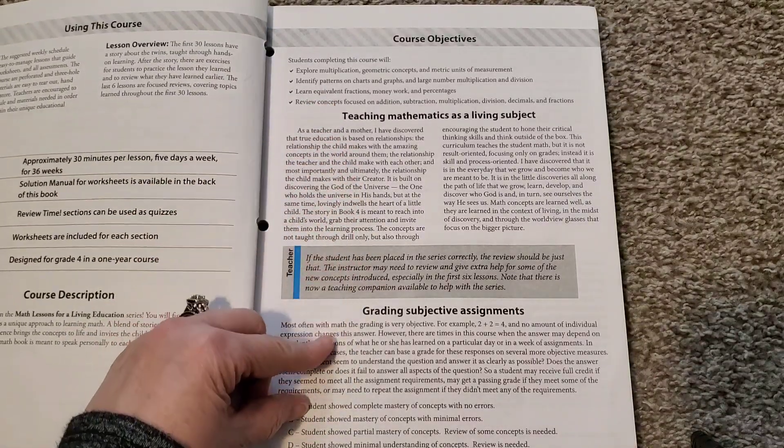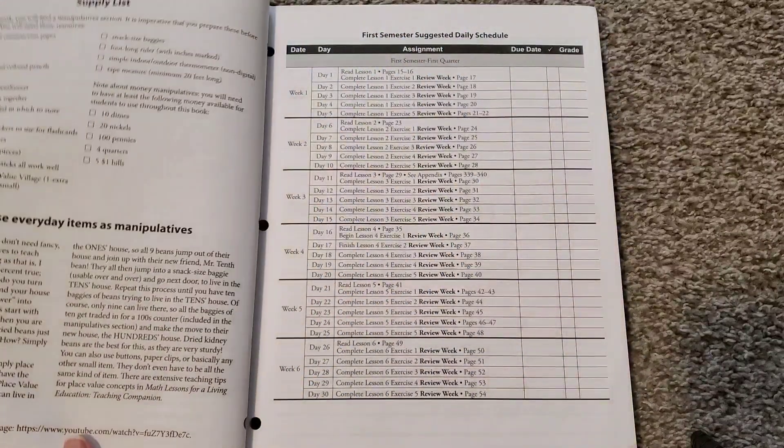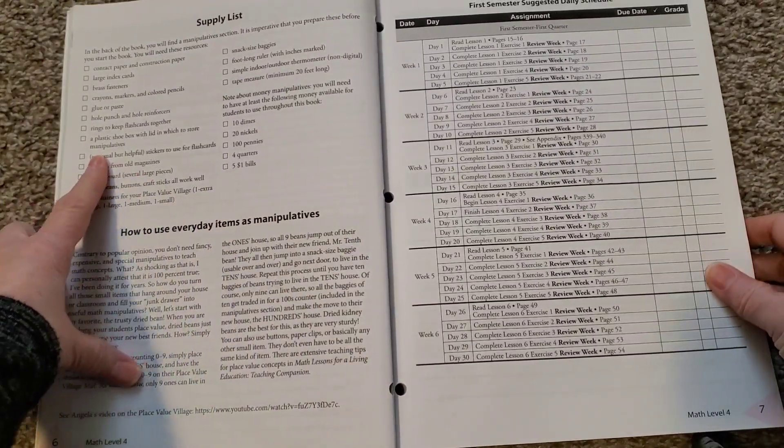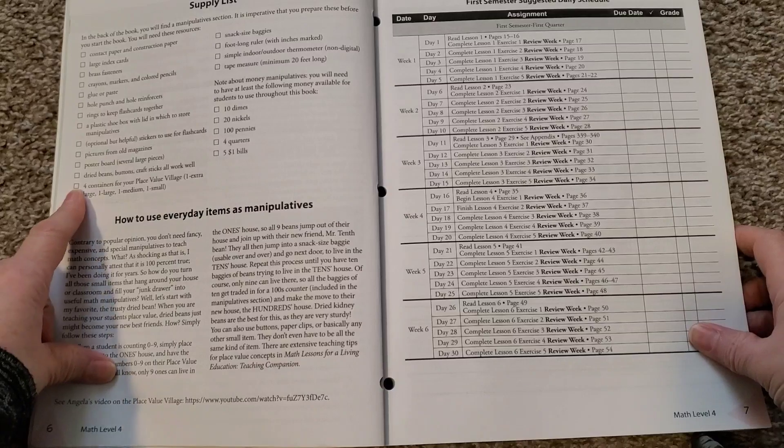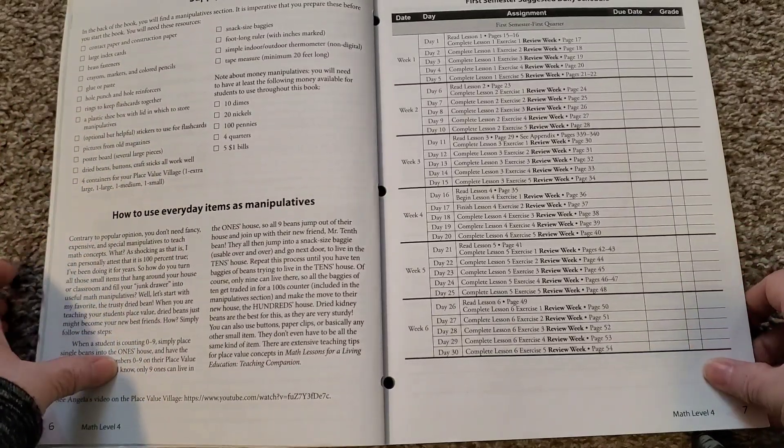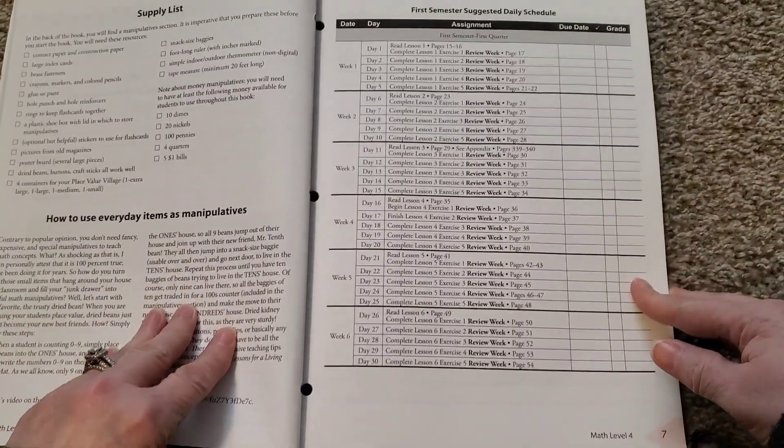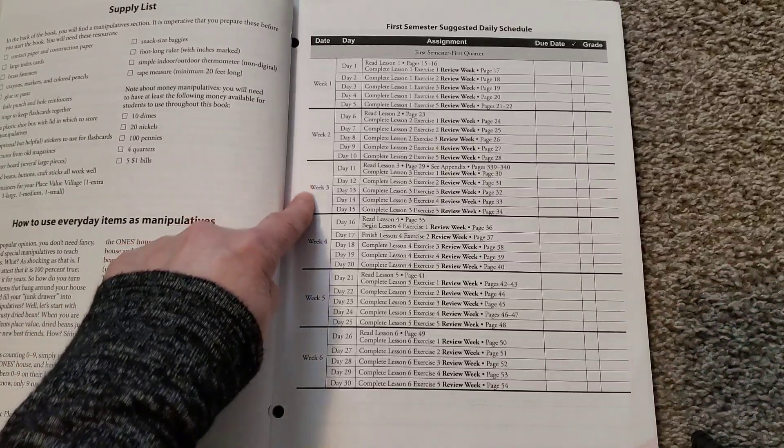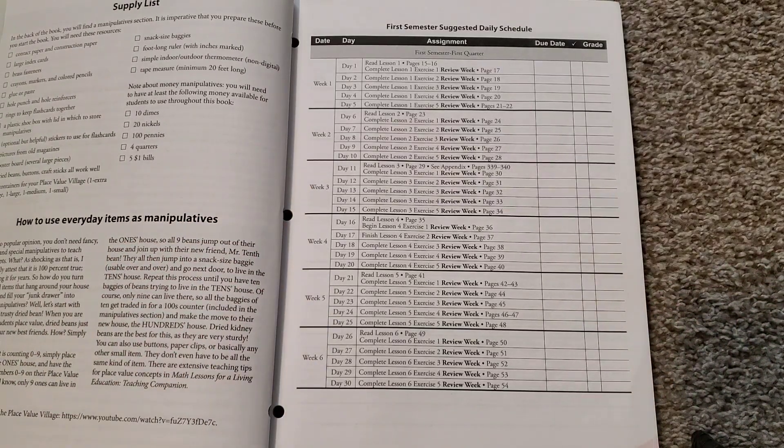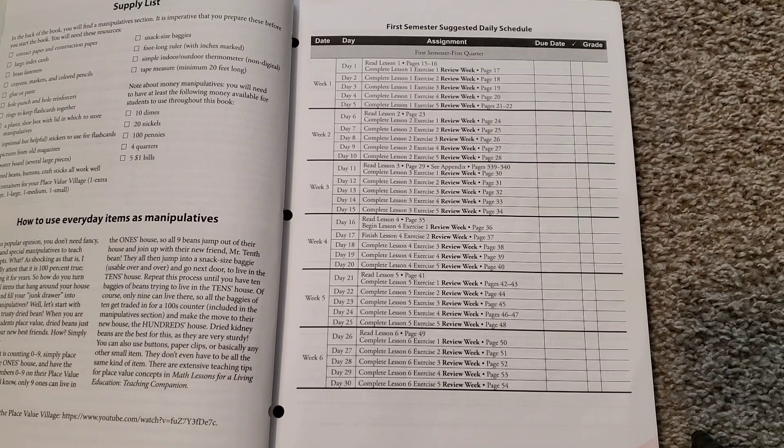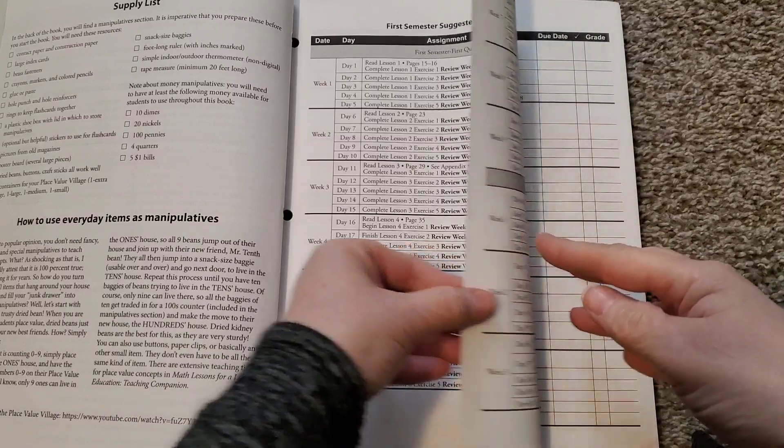And then it gives you your core objectives. Teaching mathematics is a living subject. Gives you a supply list over here, which I'll be honest, I use this my way. I've never even paid any attention to the supply list. I do everything my way. How to use everyday items as manipulatives. And then it even gives you a schedule. And once again, I don't follow the schedule. We just move at our pace and what works for us. Sometimes we do more than one part of the lesson a day. Sometimes we do less. It just depends on how it's going.